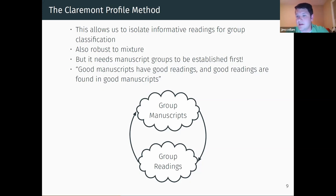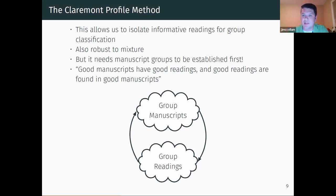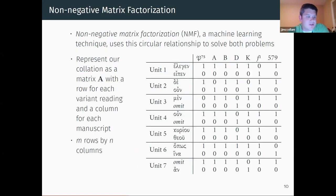The biggest limitation is the assumption at the beginning: in order for this method to work, you have to have groups of manuscripts established first. And now you can see we have a sort of chicken-and-egg problem. In the quantitative method, it behooves us to have informative sets of readings to help classify manuscripts into groups. But according to the Claremont Profile Method, in order to figure out what those readings are, it's helpful to have manuscript groups established already. So we have a circular relationship. It's with that impasse that my research picks up. Non-negative matrix factorization leverages that circular relationship between manuscripts and their readings in order to classify both of them.